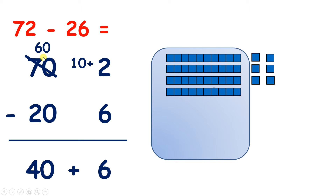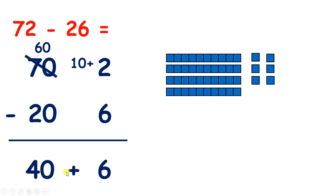So 60 minus 20 is 40. Now we have 40 plus 6, so that gives us our answer of 46.